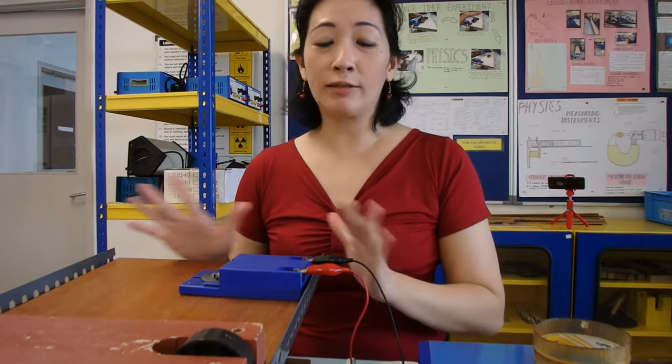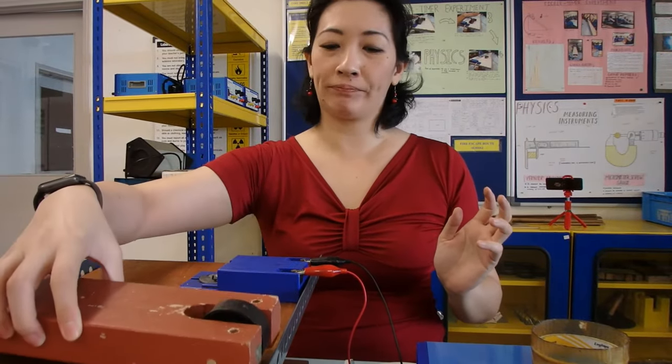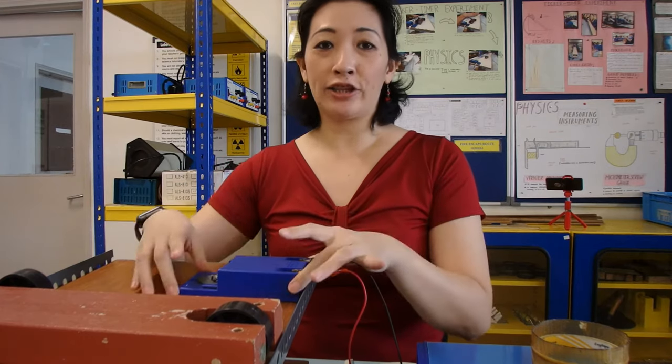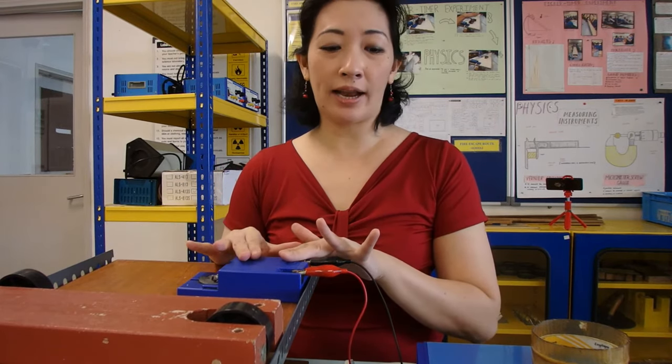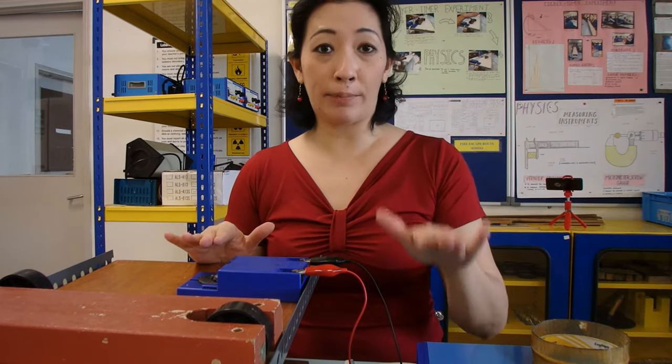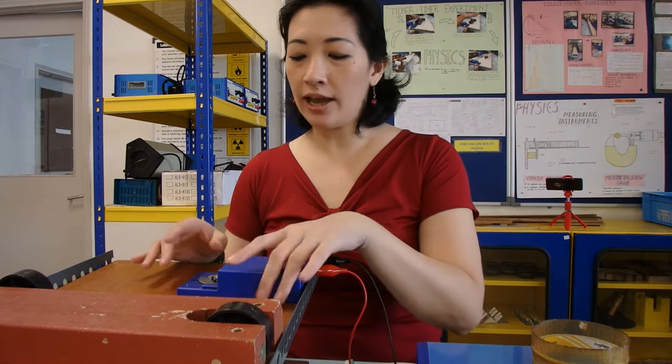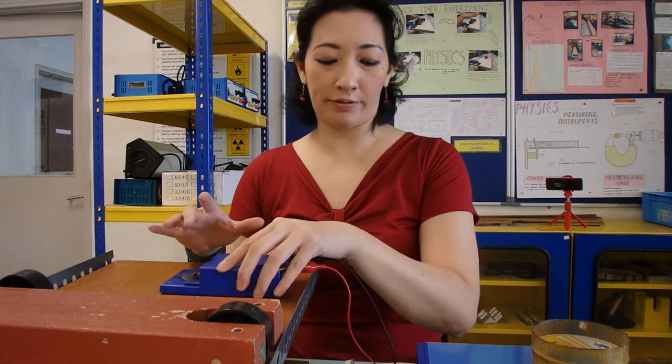Before we start the experiment, let's make sure the setup is complete first. We already know we have the trolley and the ramp. The ticker timer must be set up. It has to be connected to the power supply and as you can see, this has already been set up with the carbon paper.